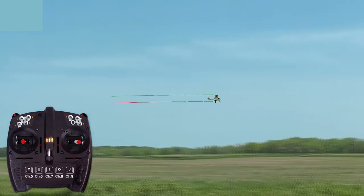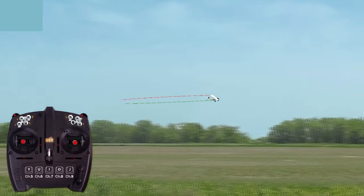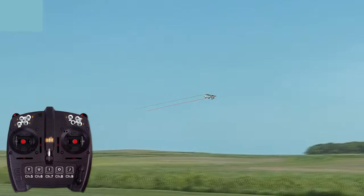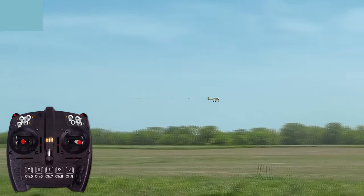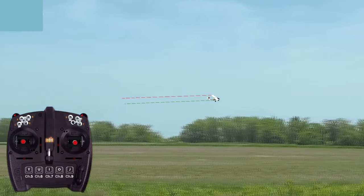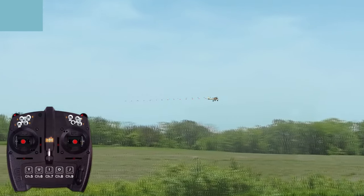Smaller course corrections are performed by smoothly inputting brief bumps of aileron to bank the wing slightly in the direction you want the plane to go. As long as the aileron is not held in, and thus the bank is only slight, the plane will typically not lose altitude during minor course corrections.